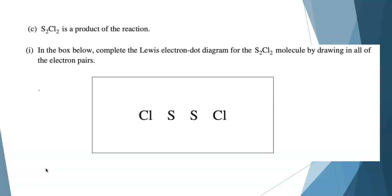Let's go on to the next part. S2Cl2 is a product of the reaction. In the box below, complete the Lewis electron dot diagram for this molecule by drawing in all of the electron pairs. Lewis structures are an important skill for AP Chemistry students. I always start by looking at the number of valence electrons. I've got two sulfur atoms, each contributing six valence electrons for 12 from the sulfurs. Each chlorine contributes seven valence electrons, and there are two, so that's 14, giving me a total of 26 electrons to play with.